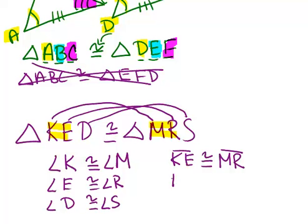We can also say that side ED is congruent to RS and that KD is congruent to MS.